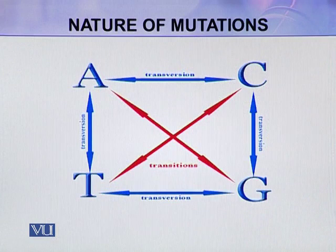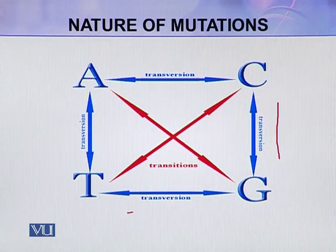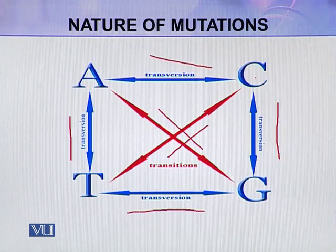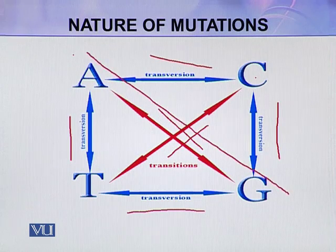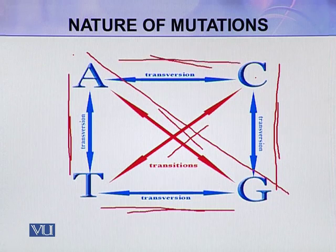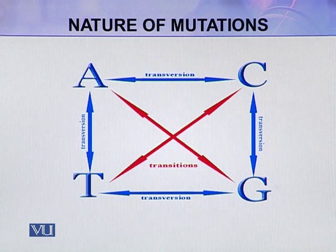In this picture, all the blue lines are transversions and all the red lines are transitions. If T is substituted for C, this is a transition. If A is substituted for G, this is a transversion. G substituted for T is also a transversion. A substituted for T is also a transversion. Similarly, A substituted for C is also a transversion.